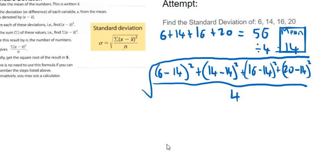So 6 take away 14 would be minus 8. So minus 8 squared would be 64. 14 take away 14 gets us back to 0. So 0 squared is just 0. 16 take away 14 is 2. So 2 squared is 4. And 20 take away 14 is 6. So 6 squared is 36.